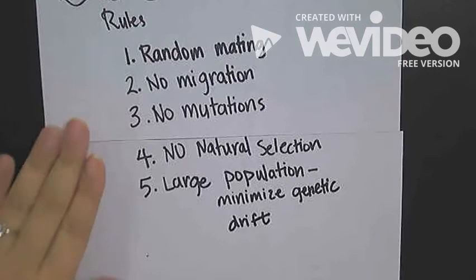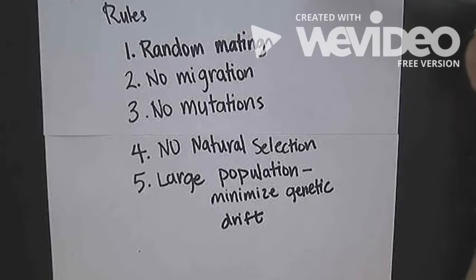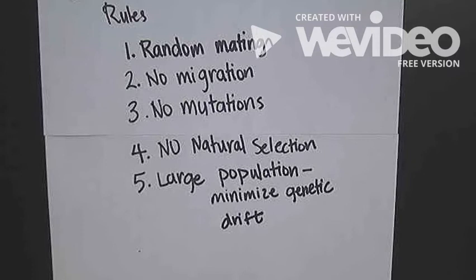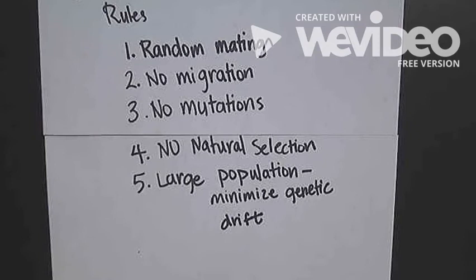It's important to note that this does not happen very often in nature. Because many populations violate one or many of these rules, they typically are not in Hardy-Weinberg equilibrium, and there's going to be a shift in those frequency of alleles. Many times students want to know, that's a lot of rules, how am I going to remember that?